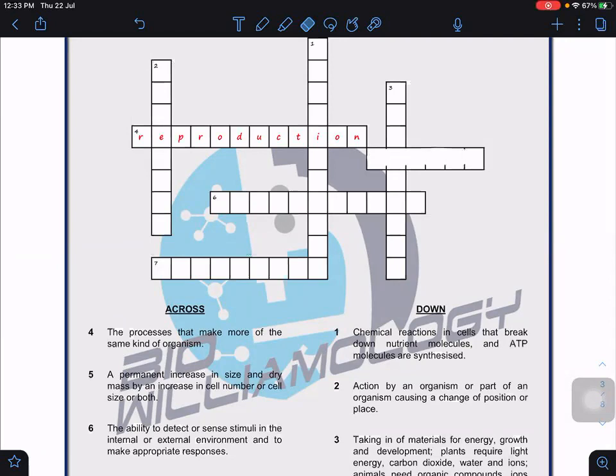Number six: the ability to detect and sense stimuli in internal or external environment. Internal stimuli - for example, your blood pH, blood oxygen concentration, blood CO2 concentration, your internal core temperature. External - the temperature outside, like in an air-conditioned room. This is sensitivity.